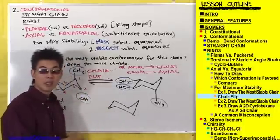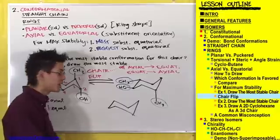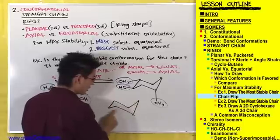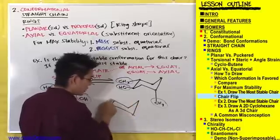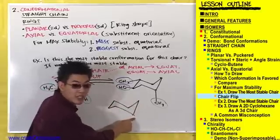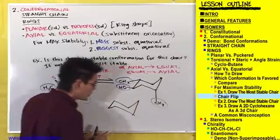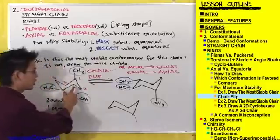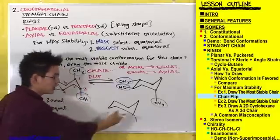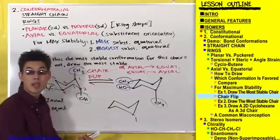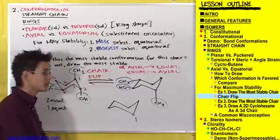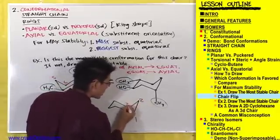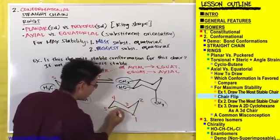I'm going to use eeny meeny miny moe just to show you that it doesn't matter where you start. So let's start from this carbon right here and make this carbon number one. For this first chair I chose to go clockwise, so I'm just going to go counterclockwise on this one to show you that it doesn't matter how you number it. So: one, two, three, four, five, six.